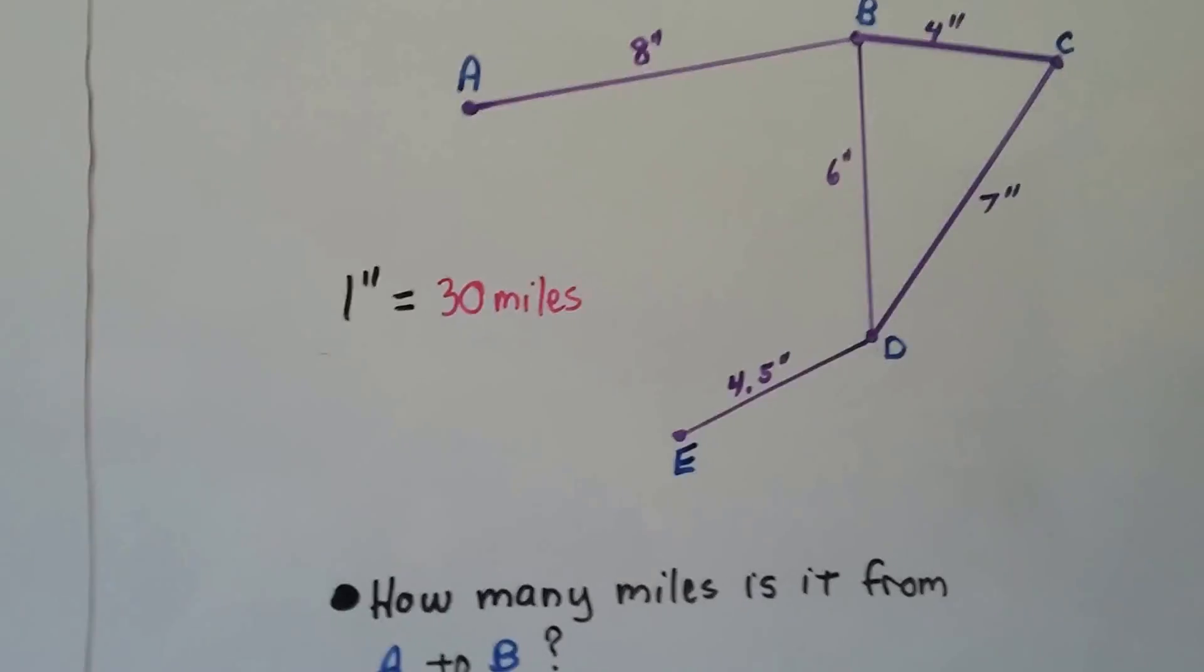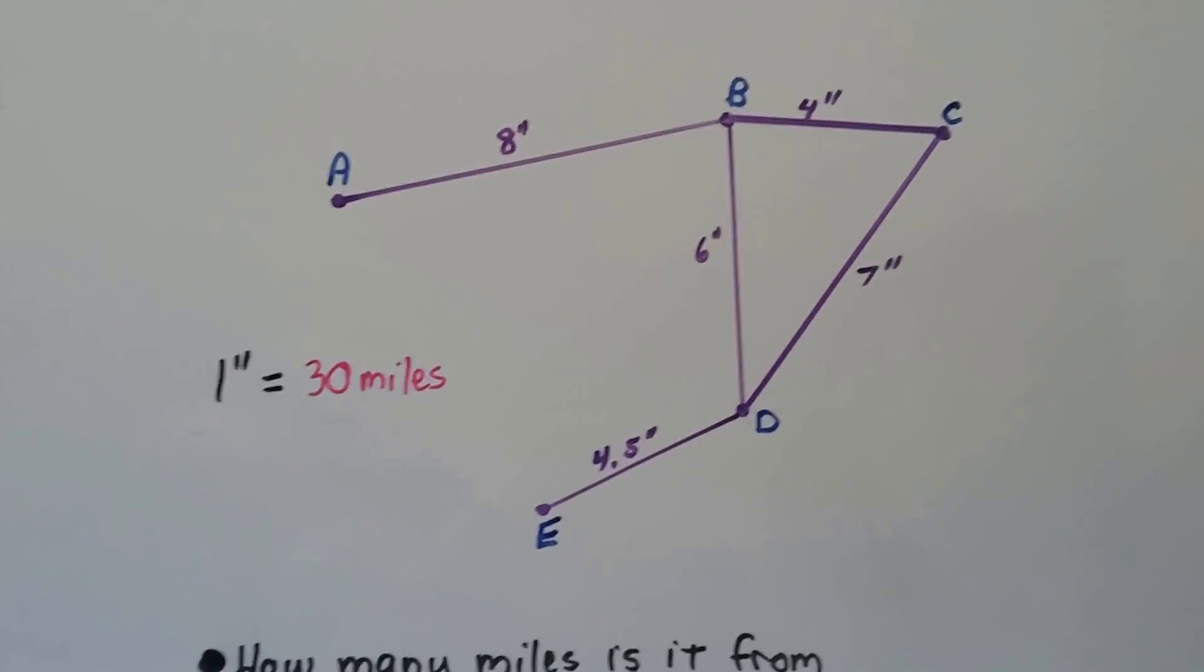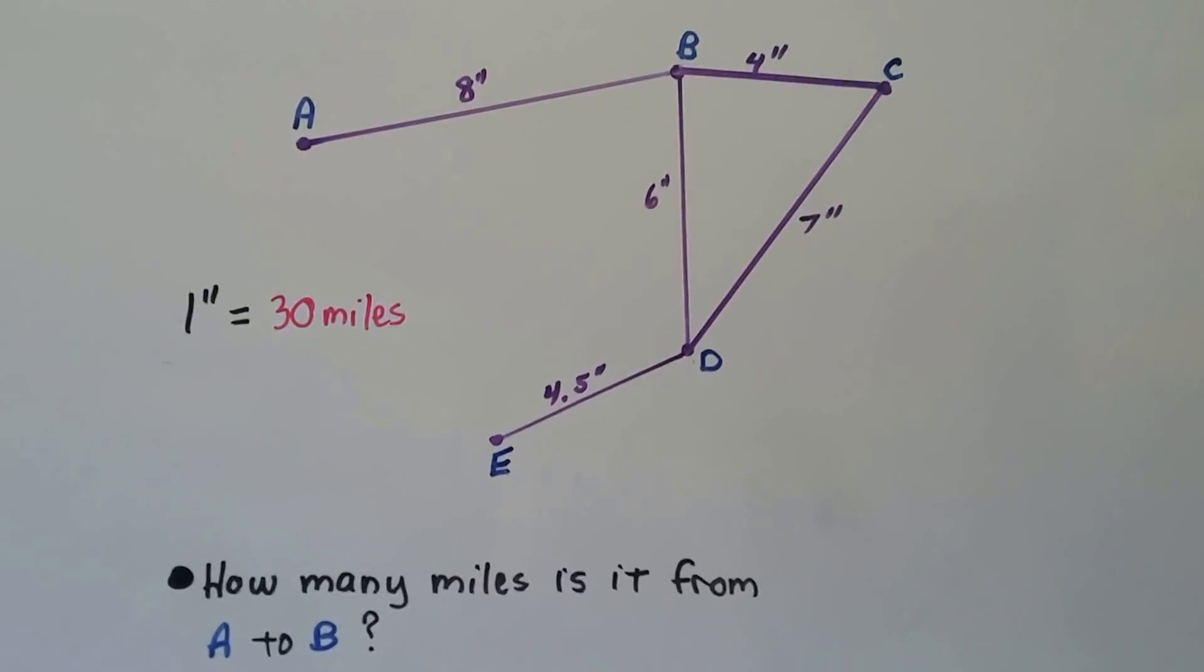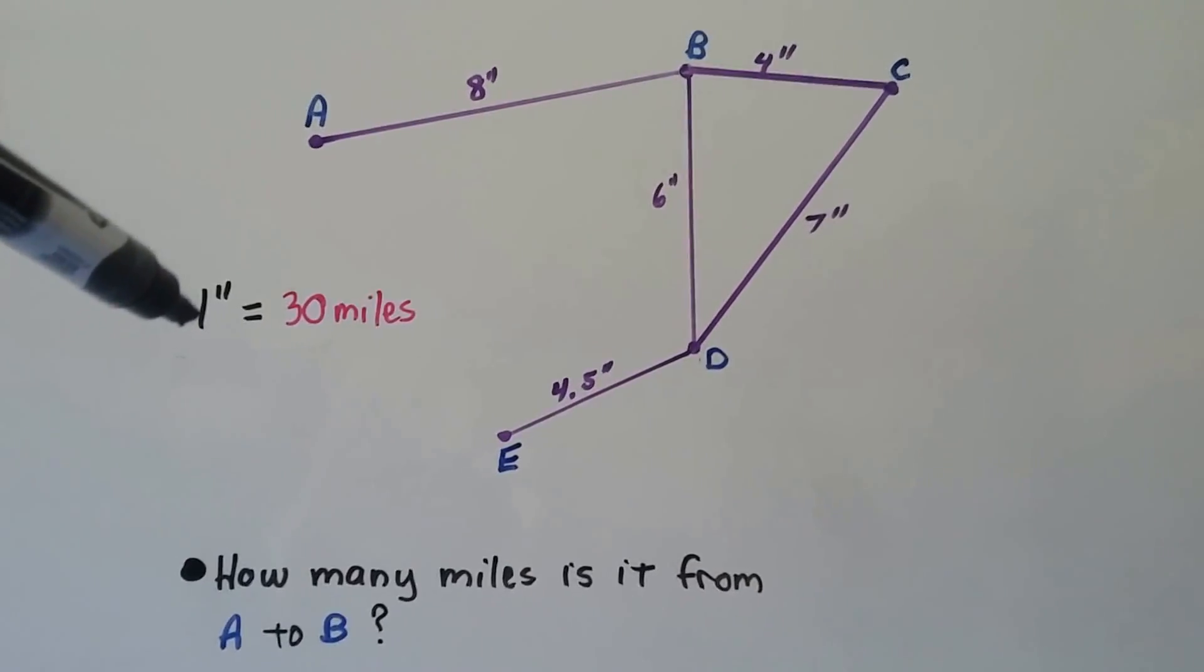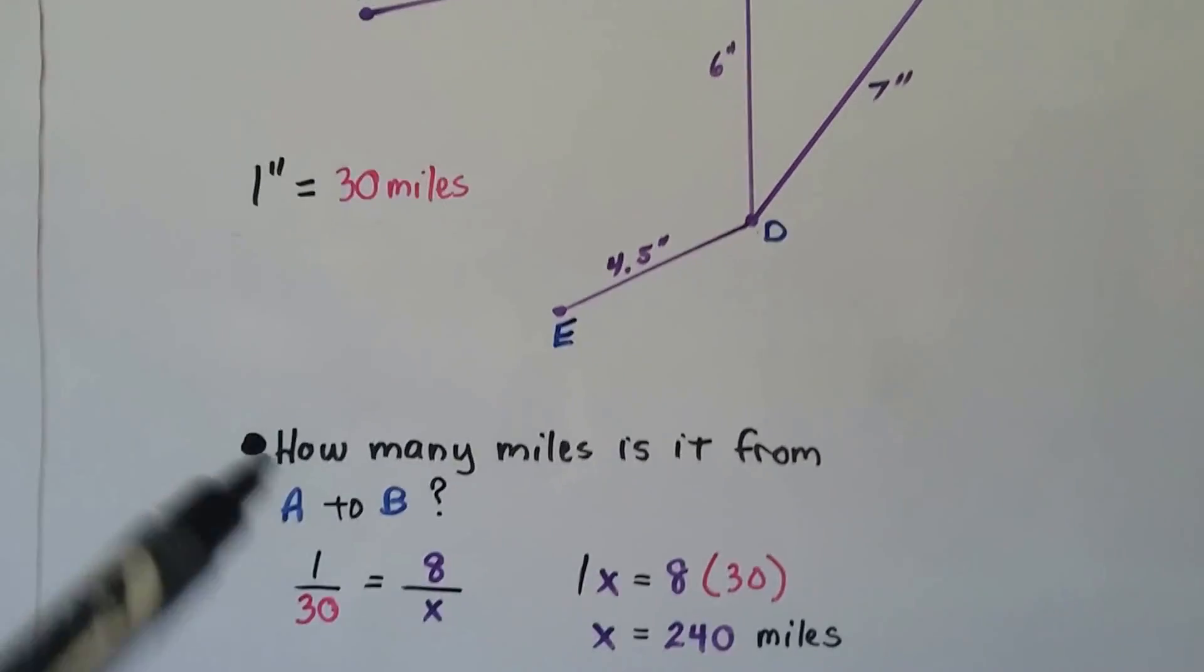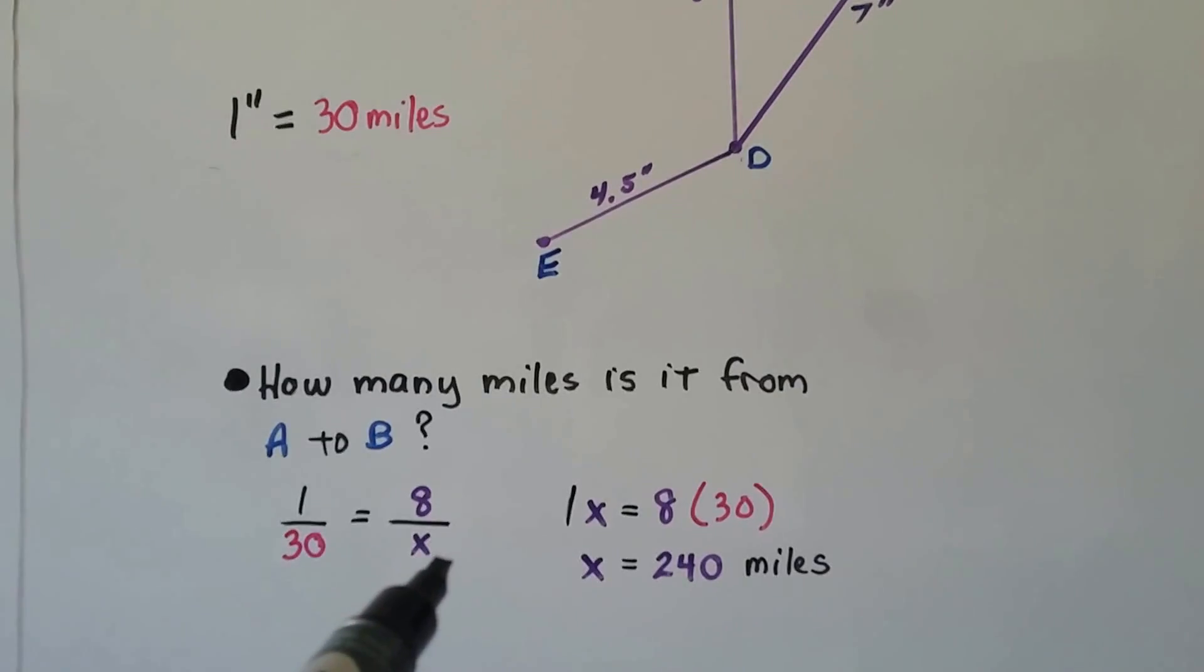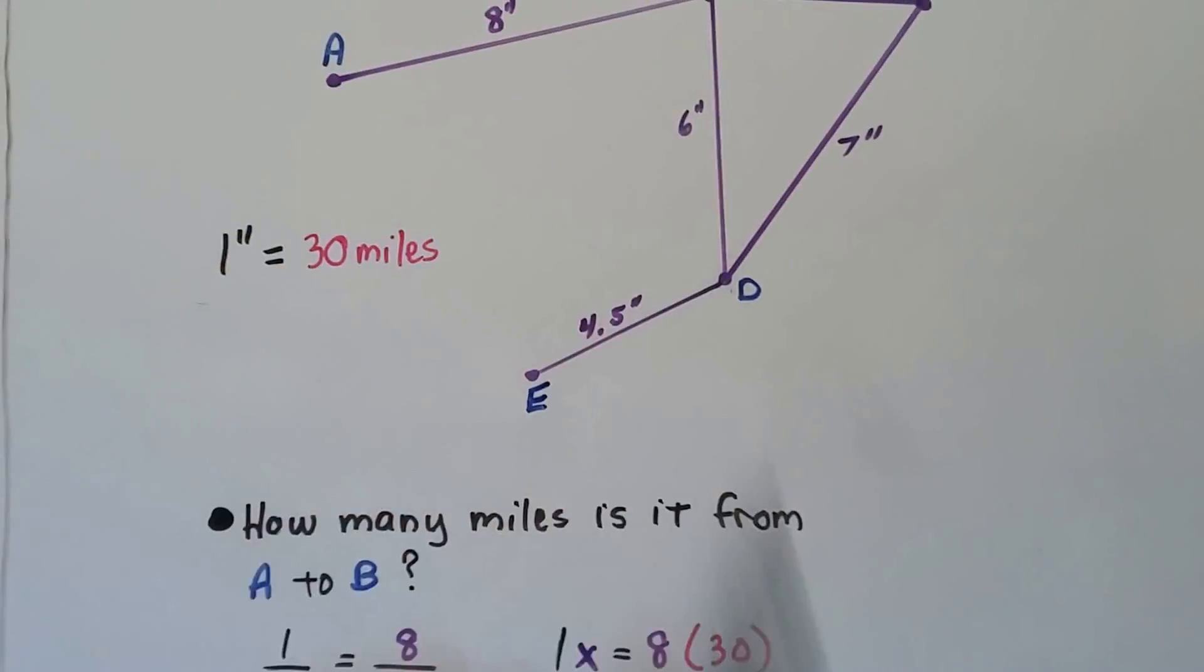Now, here the purple lines are roads, and the capital letters are towns. So, we have town A, B, C, D, and E. And, one inch is equal to thirty miles. So, how many miles is it from A to B? Well, you could quickly say, because this is a unit rate of a one, we could easily say, if one is thirty, then eight is two forty. But, we could do it like a proportion. This is our fraction, one thirtieth. And, it's going to equal eight inches over the actual one. We cross multiply and get one x is equal to eight times thirty. So, we know it's two hundred and forty miles from that town to that town.